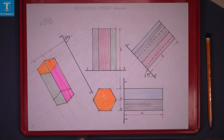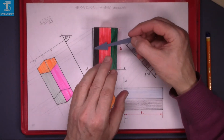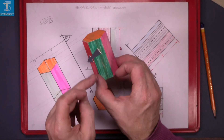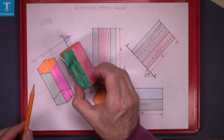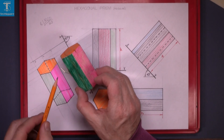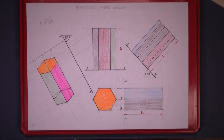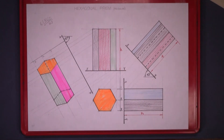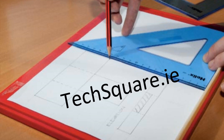Now that's it coloured in. To look at it again the way we set out — look along the arrow — there's what we see: you have your three surfaces. And that's hexagonal prisms complete.